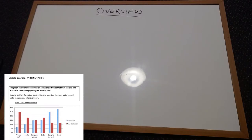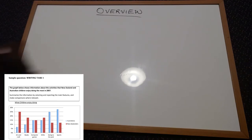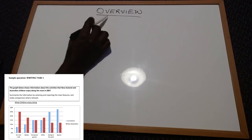We are going to look at how to write a simplified overview for IELTS Task 1. The format I'm going to show you is very simple, and if you are able to practice and follow whatever I'm going to talk about here, you should be rest assured that you have a Band 7 in Writing Task 1.